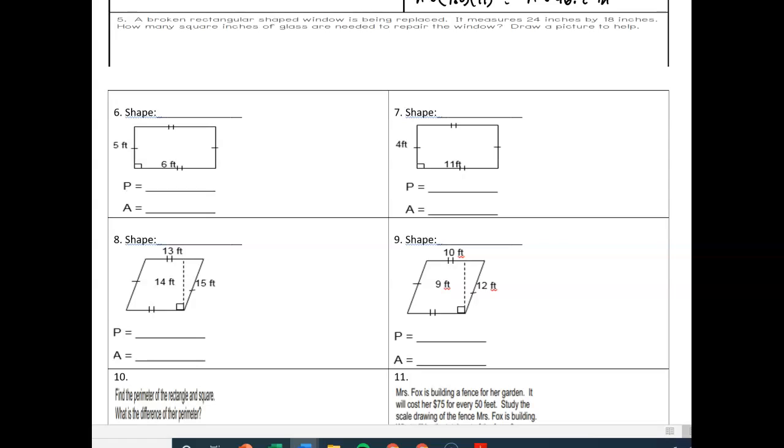In number five, we have a quick word problem. It says a broken rectangular shaped window is being replaced. It measures 24 inches by 18 inches. How many square inches of glass are needed to repair the window? Draw a picture to help. So you got my rectangle right here. I'm drawing to help me. And then I have my dimensions, 24 by 18. I know I'm dealing with area because it talks about square inches. And I know that I need to use the rectangular formula. So A equals b times h. A equals 24, that's my base, times my height, which is 18. So 24 times 18 gives you an area of 432 inches squared that you need to replace.